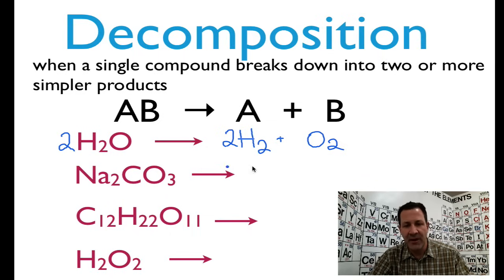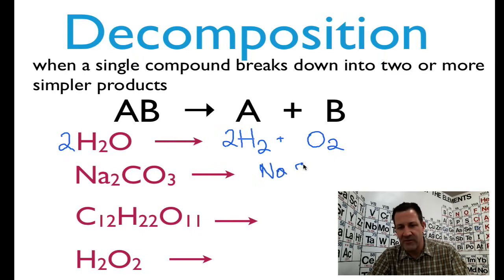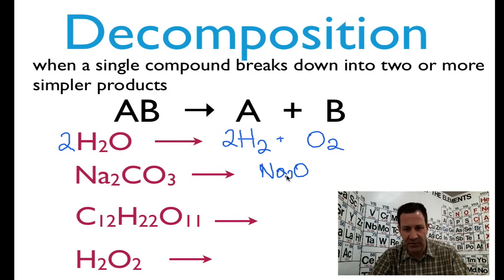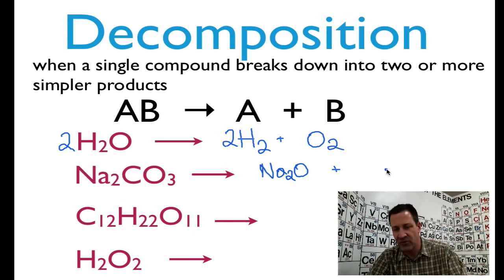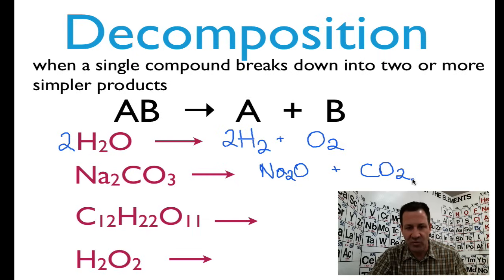Now we have sodium carbonate. And sodium carbonate is going to decompose into two other compounds. We're going to have Na2O, sodium oxide. We know that oxygen is minus 2 and sodium is plus 1, so we know we're going to have to put a 2 as our subscript so that it has a neutral charge overall. And then we're also going to have carbon dioxide, CO2. And I believe two sodiums, one carbon, three oxygens — I believe that is balanced just like that.